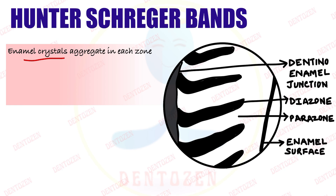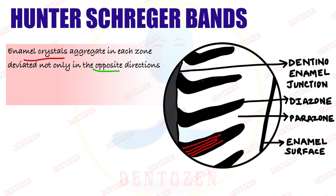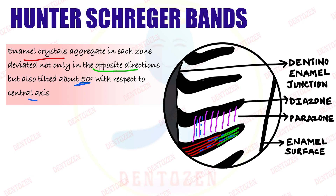Within the bands we have about 10 to 20 rods per band, and within the enamel rods there are enamel crystals. There is a change in the direction of these crystals between the two zones — in longitudinally cut rods the crystals are arranged one way, and in transversely cut rods they are arranged differently. Within each zone, the crystals further tilt 50 degrees to the central axis. For the light band (parazones) the crystals deviate 50 degrees to the central axis, and for the dark band (diazones) they also deviate 50 degrees — but in opposite directions between the two bands.